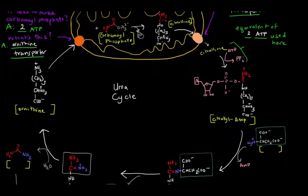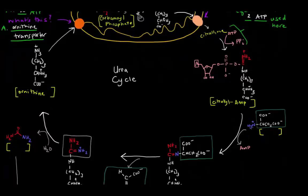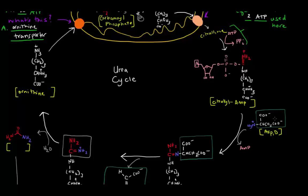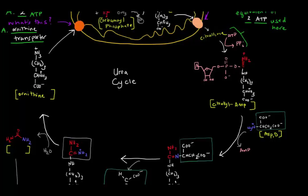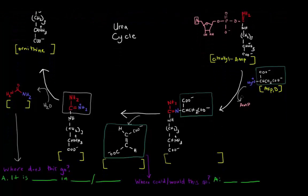To the citrulline-AMP, we're going to add this molecule here, which you should recognize as aspartate. Aspartate is an amino acid with a carboxyl group, amino group, H, and an R group — I've drawn the amino group here in blue. Once this aspartate incorporates itself into the citrulline-AMP, the AMP hops off, and the aspartate attaches right at that carbon. The resulting molecule is called arginosuccinate.